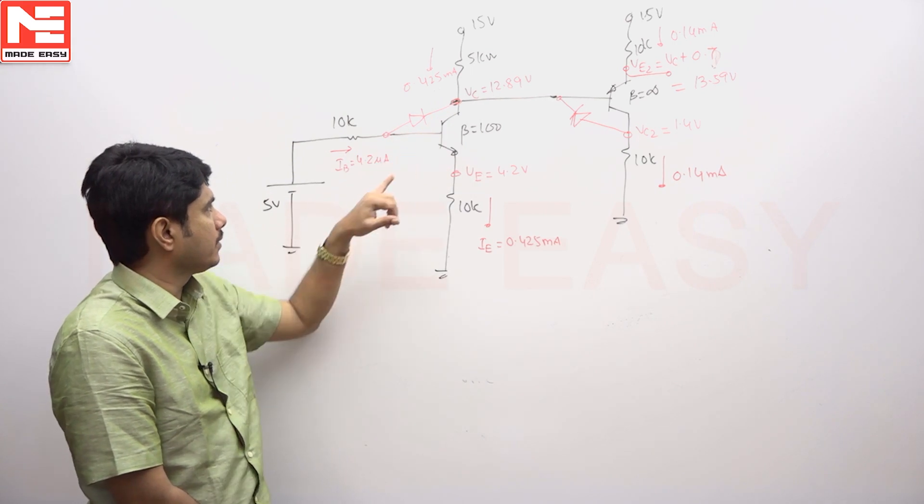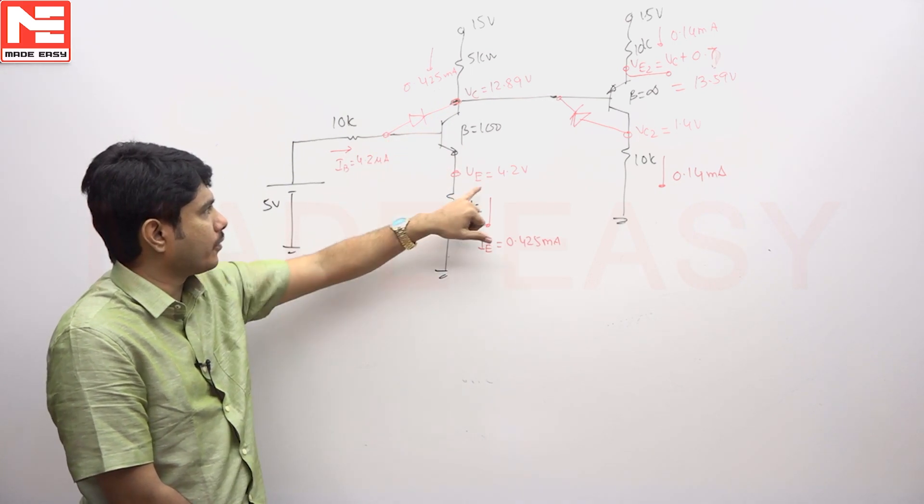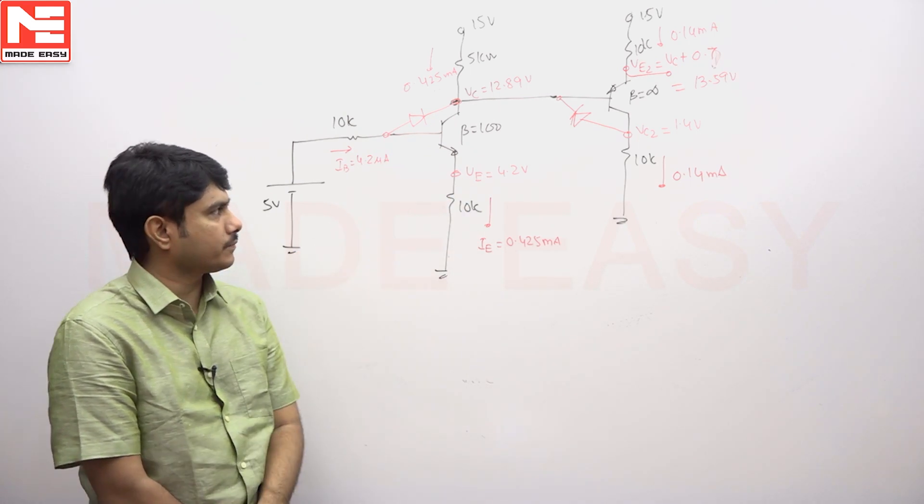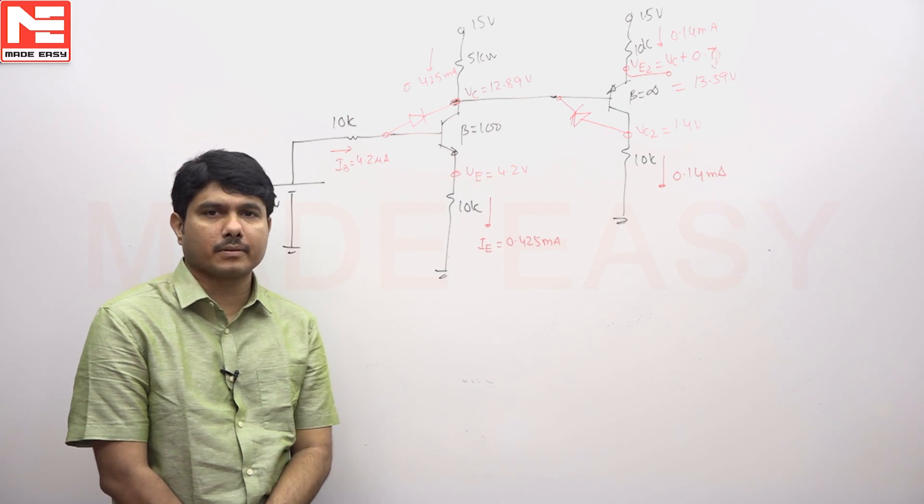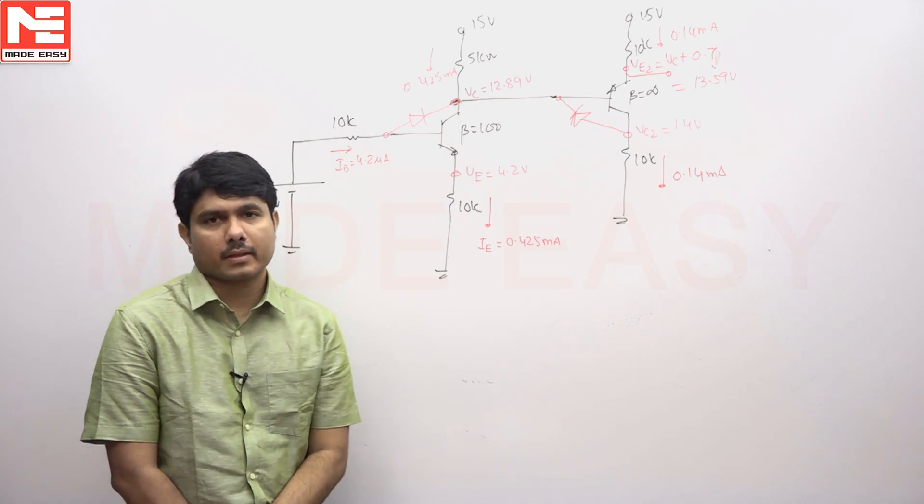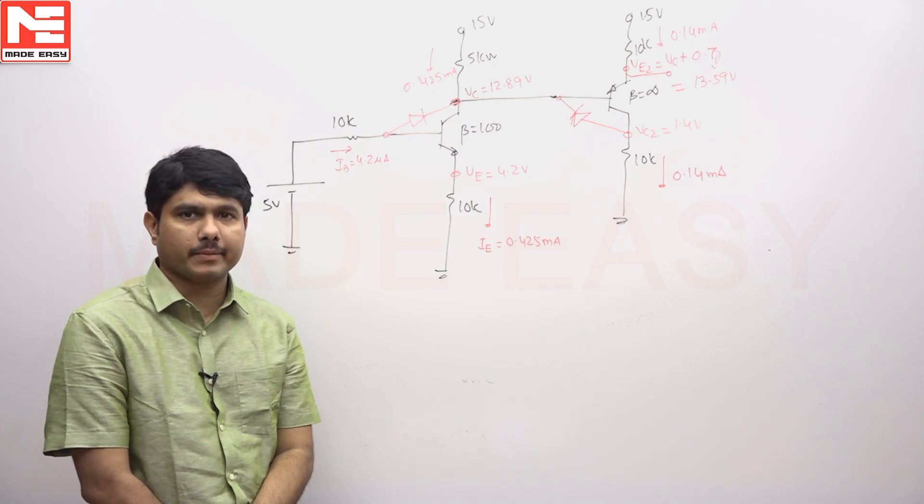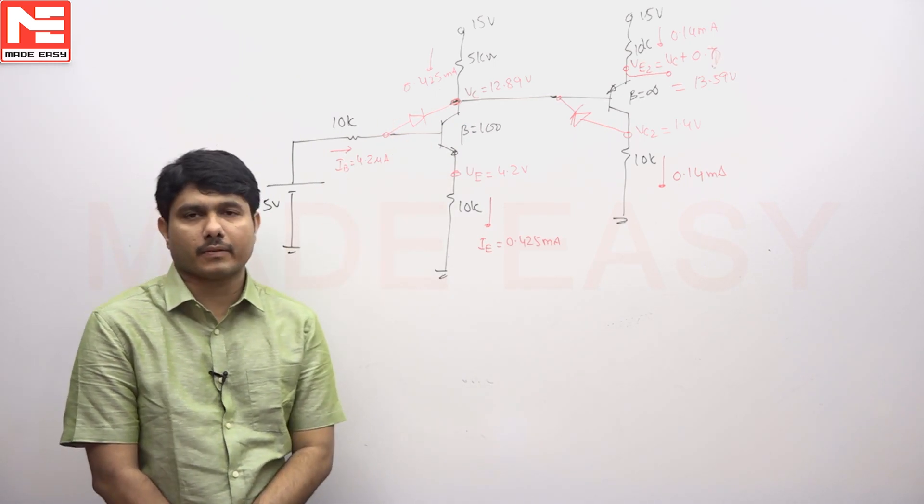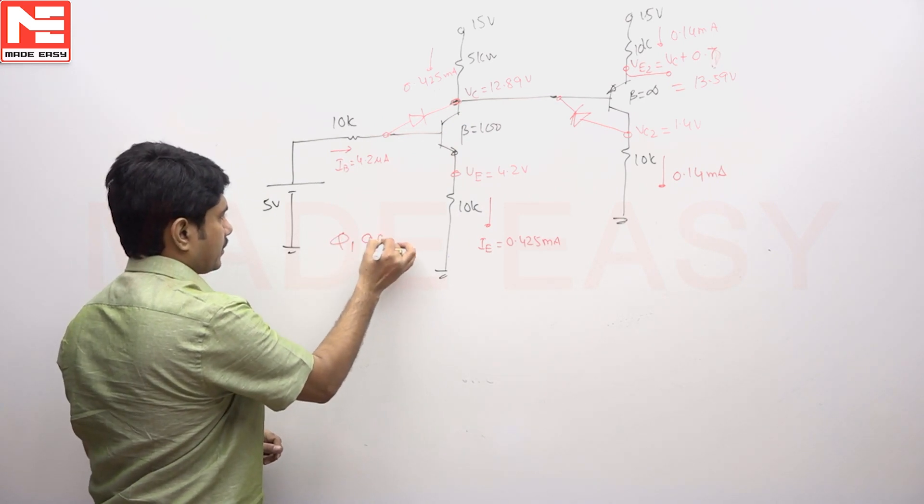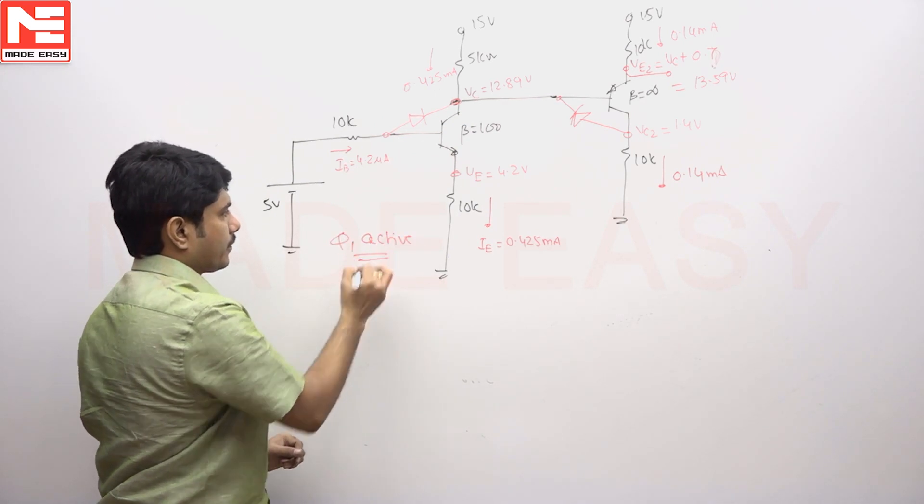Now I will test this diode. The second diode on this side has a potential of 4.2 plus 0.7, which is nearly around 4.9 volts. If this is 4.9 and this is 12.89, that means VC is greater than VB. Therefore, this diode will be off, so it is working under active region.